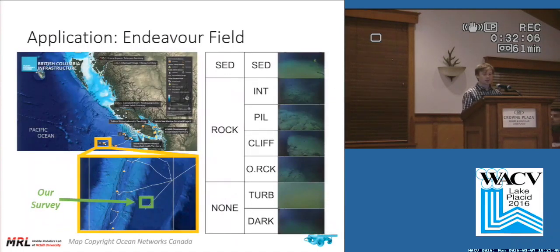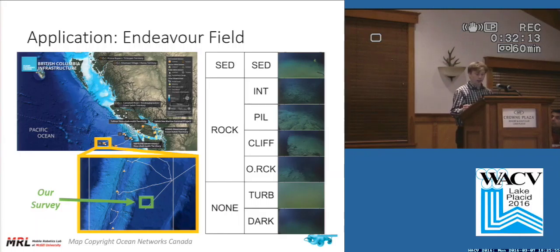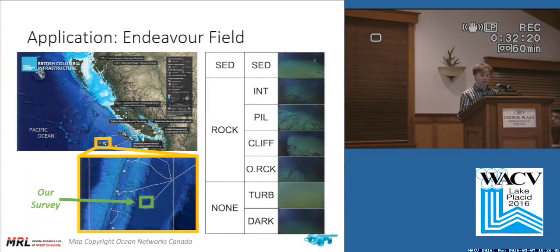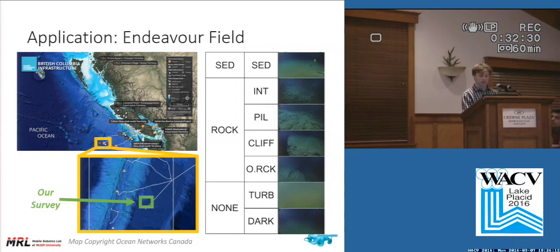We were motivated to build this pipeline for application to a particular area — that's the Endeavor field, which is marked in the gold box in the top map. Endeavor is about 300 kilometers west of British Columbia, and it's about 2.5 kilometers deep. It's a volcanic hydrothermal vent complex, and has been studied for 40 years for its geology and ecosystems, but these kinds of maps don't really exist there, so this was kind of important work for some of the researchers at Ocean Networks Canada.